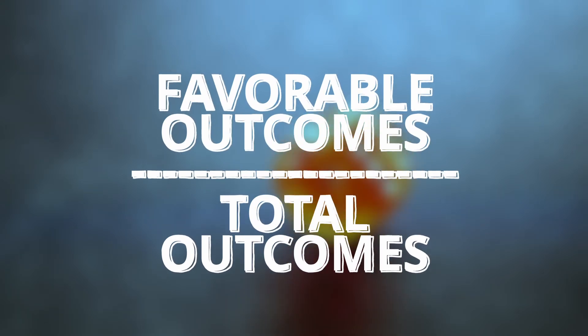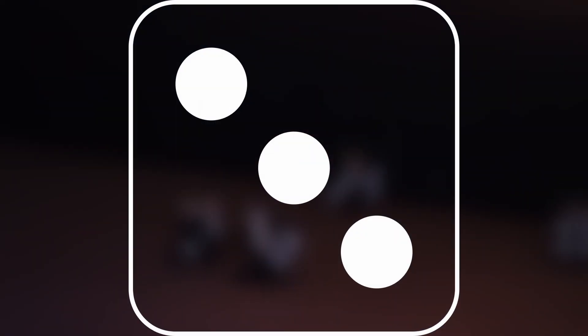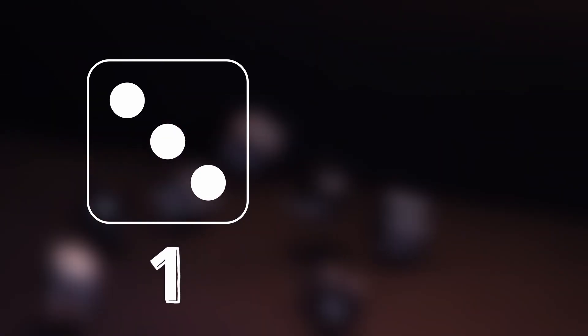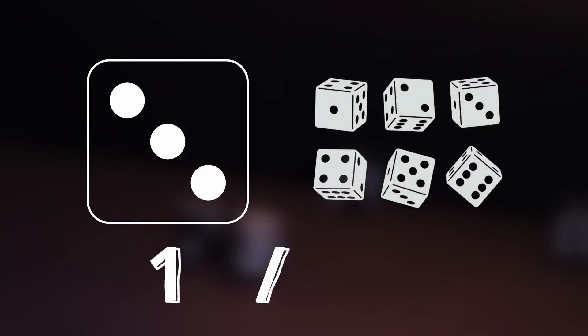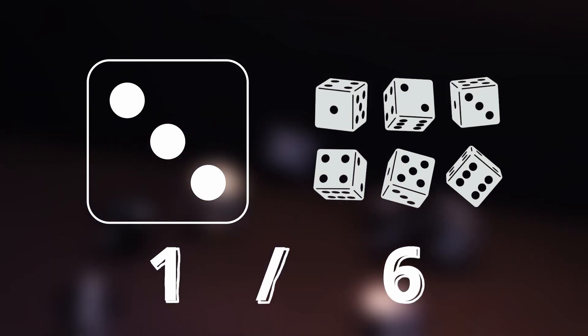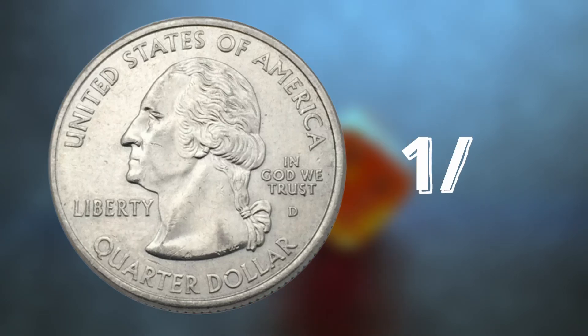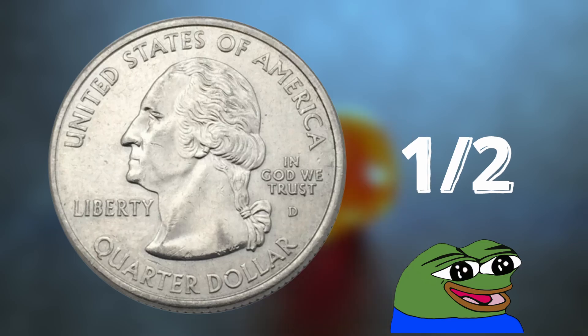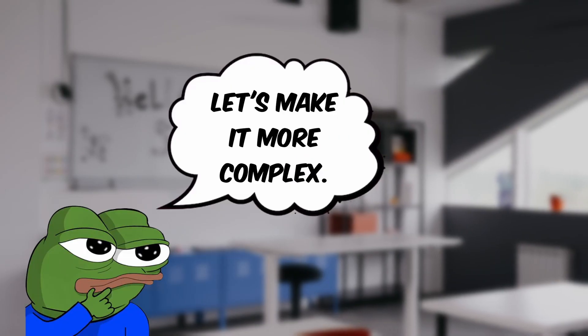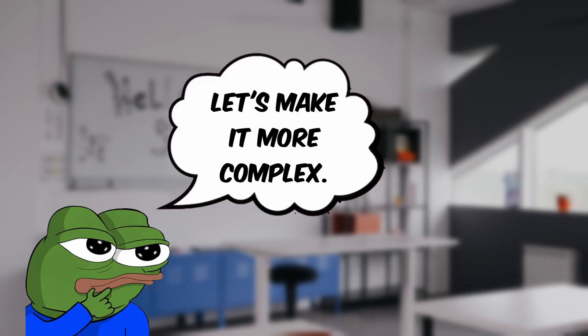So for example, the probability of rolling a 3 on a dice — that's one outcome I want, which is the 3, over 6 possible outcomes, which is all the sides of the dice. So that's 1/6. Probability of tossing heads on a coin, that's one outcome I want over 2 possible outcomes — 1/2. You get the idea. There are several ways to make this basic principle even more complex.